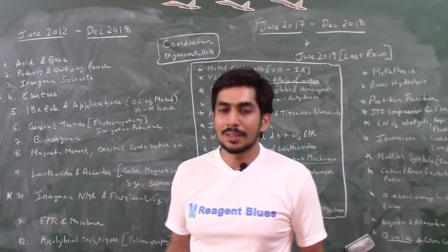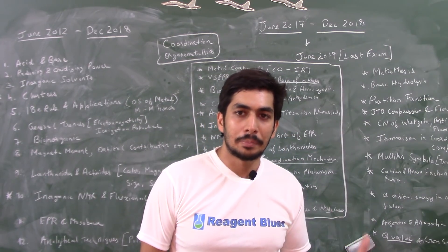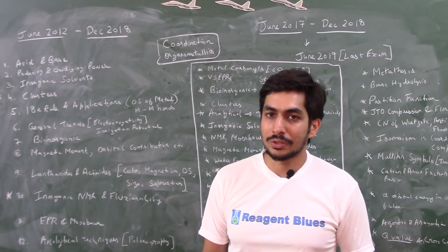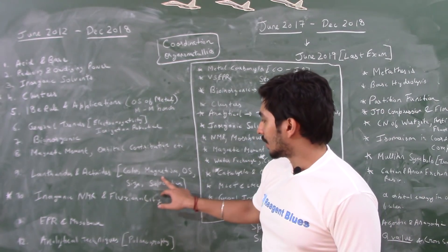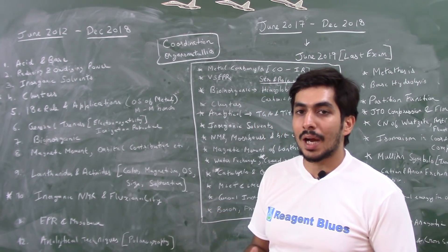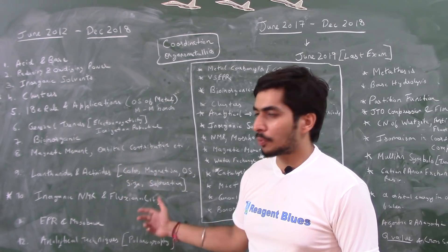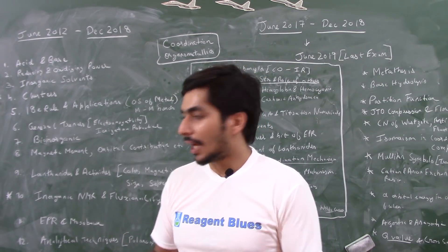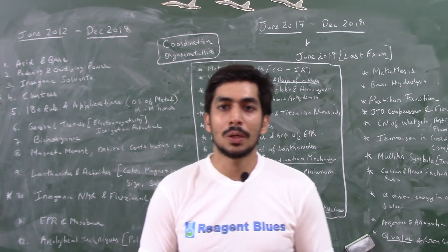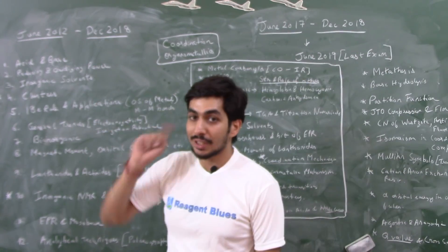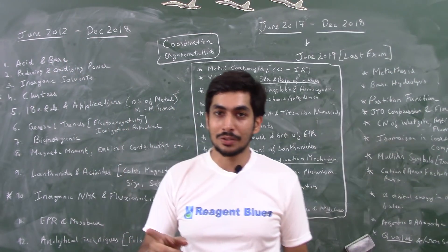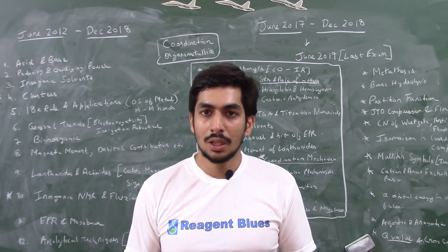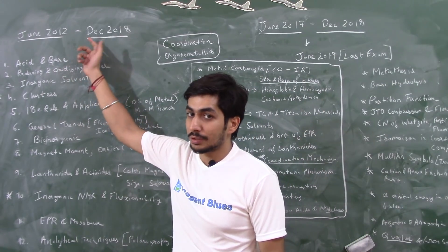There are simple questions on calculating magnetic moment in Bohr magnetons and the number of unpaired electrons — straightforward coordination chemistry. From lanthanides and actinides, a couple of questions are always in the exam covering color, magnetism, oxidation state, size, and how to separate lanthanides using ion exchange. There have been questions on lanthanide contraction and size comparisons. If you sincerely do every question from June 2012 to December 2018, no one can stop you from cracking the CSIR exam.